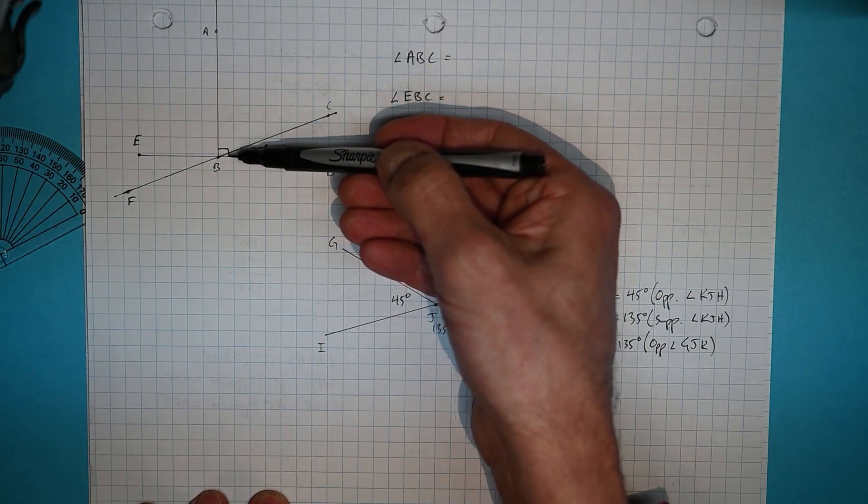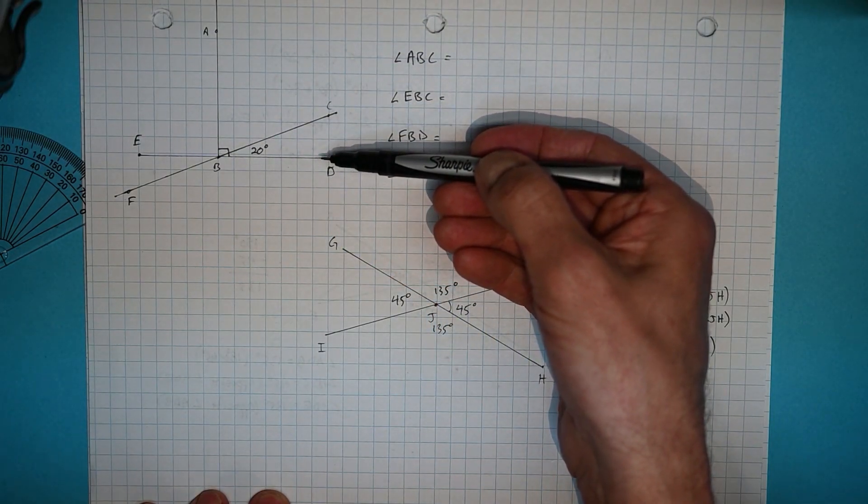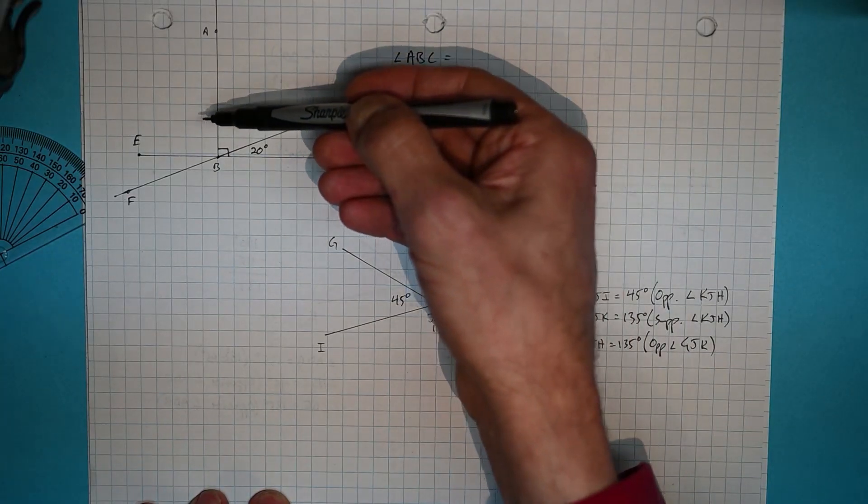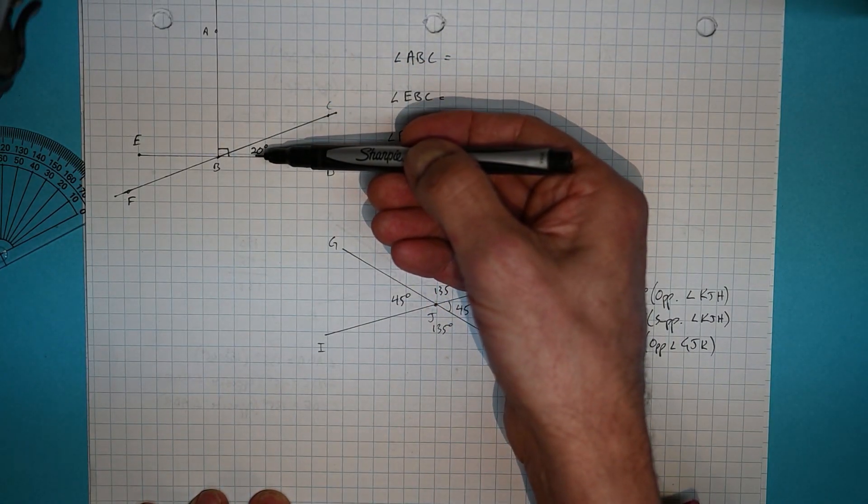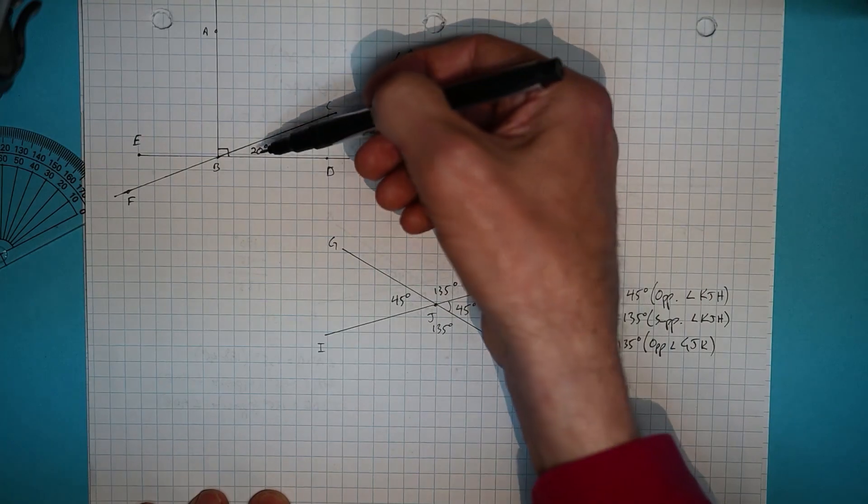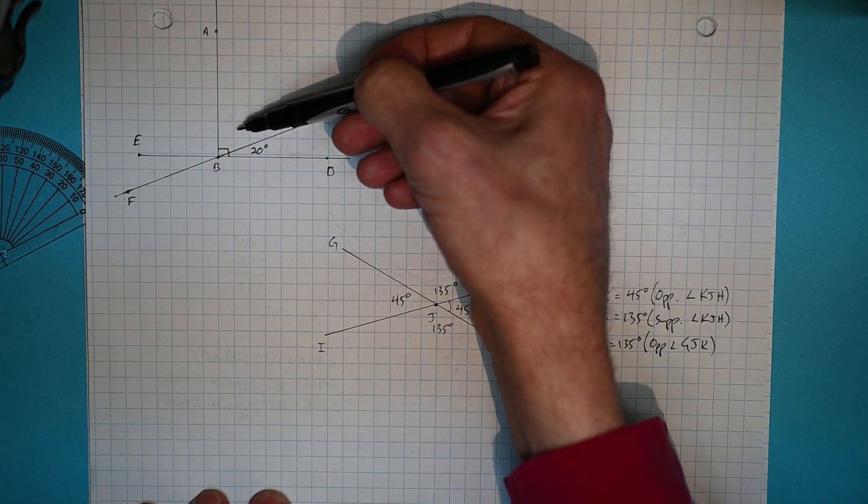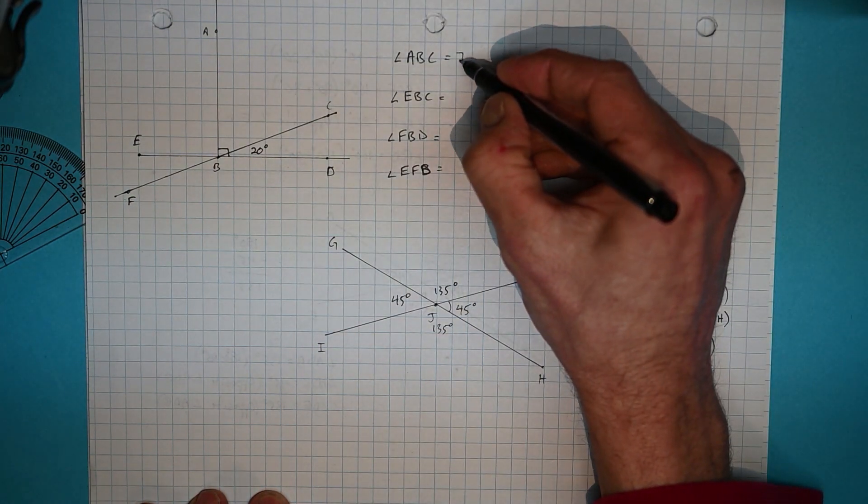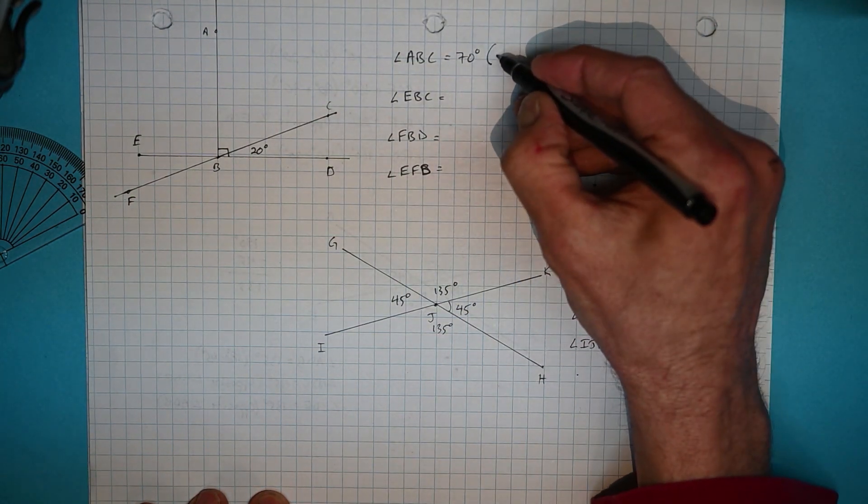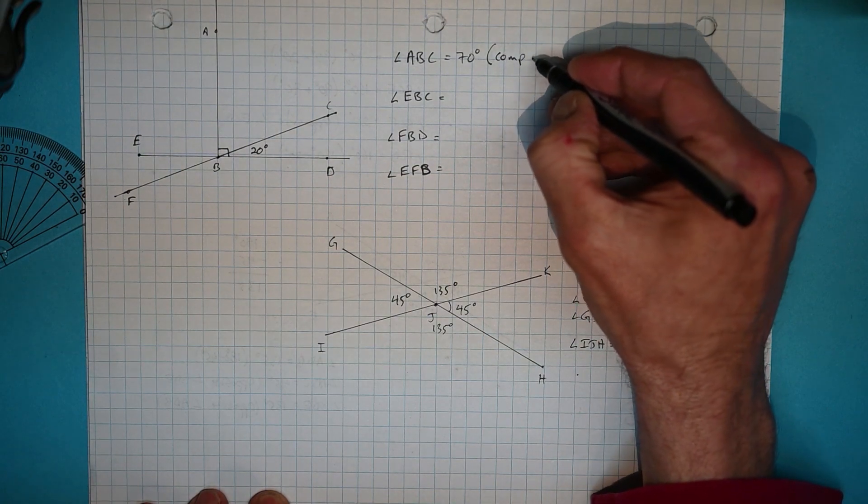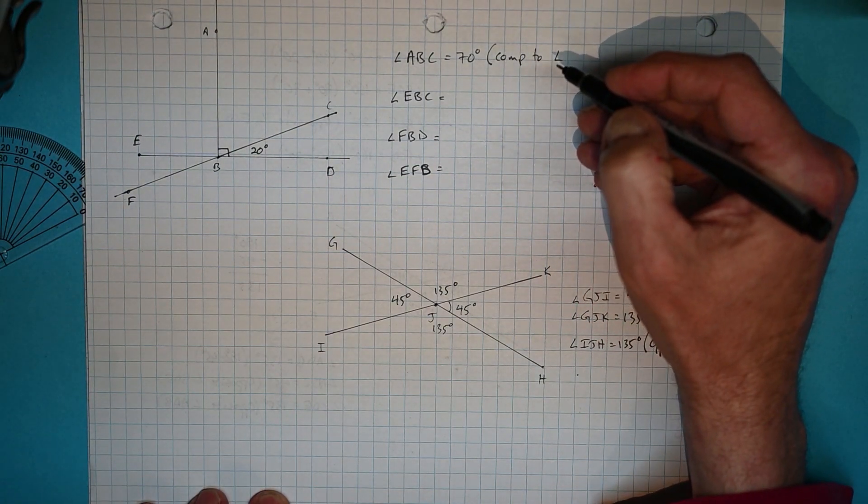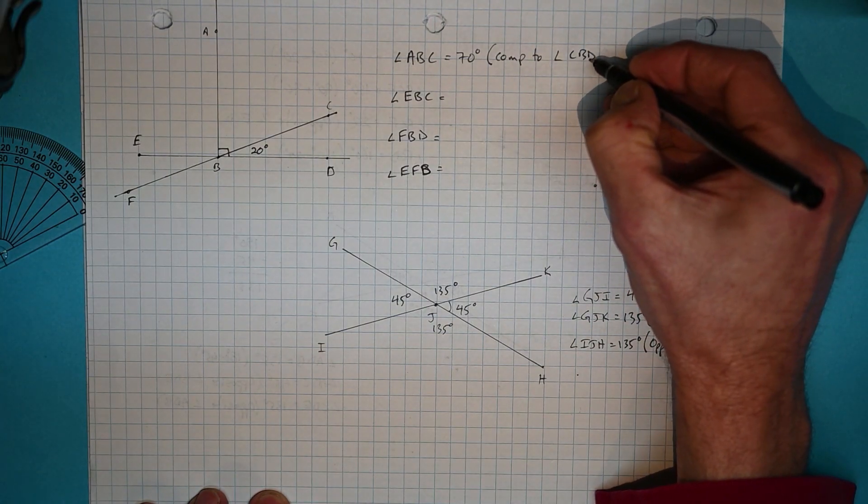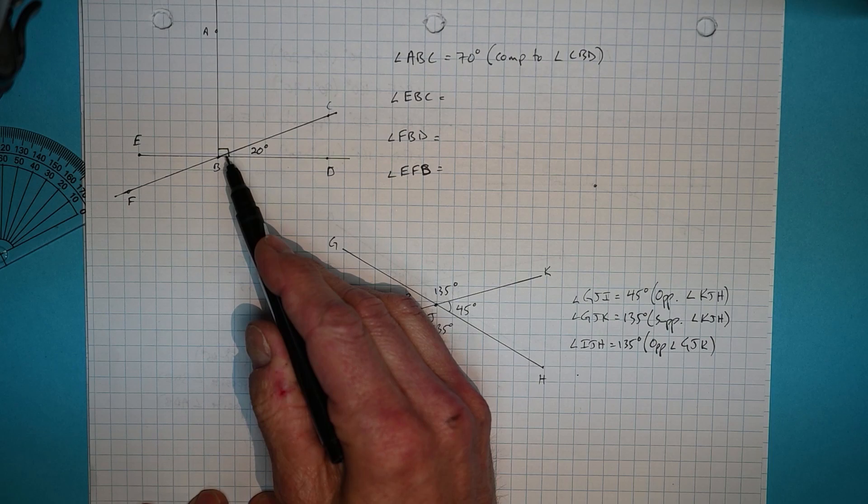You've probably noticed it is part of a 90 degree angle. And if you add it to CBD, you get that complete 90 degree angle here. So we know they're complementary. We know that 90 minus 20 gives the 70 for here. So we know that ABC must be 70 degrees. And that's because it is complementary to angle CBD.